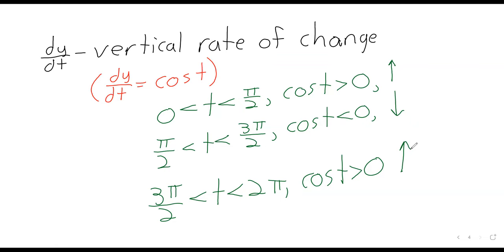Then between 3 pi over 2 and 2 pi, the cosine of t is positive again, and we're going up once more. And this pattern is going to repeat. The curve is going to go up, then go down, then go up, then go down.